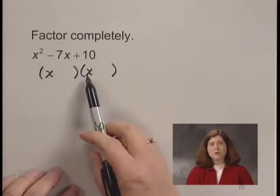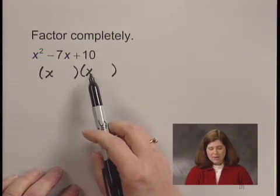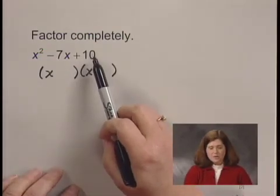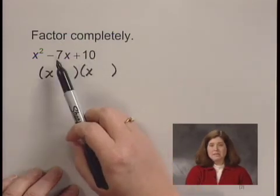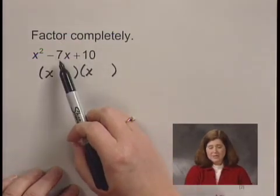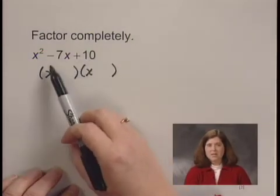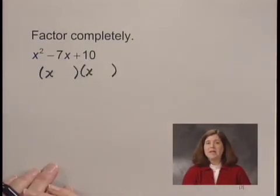I look for factors of 10 whose sum is negative 7. Now since the numbers have to multiply to a positive 10 and add to a negative 7, I know I want negative numbers.